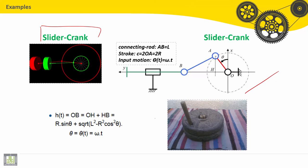So the connecting rod has length A to B, which is L. The total stroke of the piston is C equal to 2A, or 2OA, which equals R.